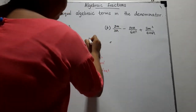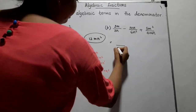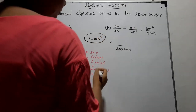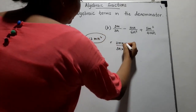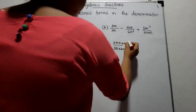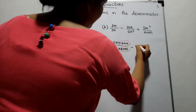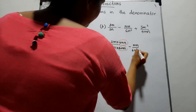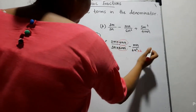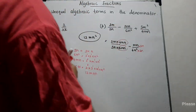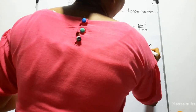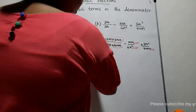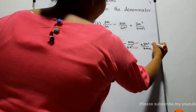The common denominator is 12MN squared. To convert the first denominator 3N to 12MN squared, we multiply by 4MN — so the numerator is also multiplied by 4MN. For the second fraction, MN over 6N squared: to obtain 12, we multiply 6 by 2; and to obtain N squared, we multiply by N, giving multiplier 2N. For the third fraction, 5M squared over 4MN: to obtain 12 we multiply 4 by 3, and to obtain N squared we multiply by N, giving multiplier 3N.